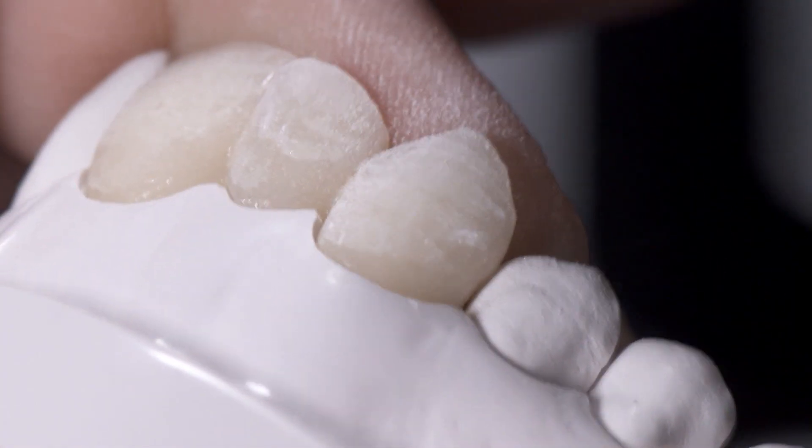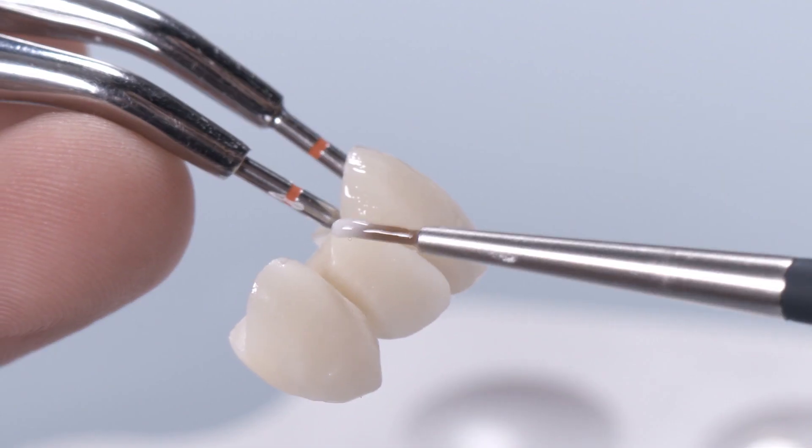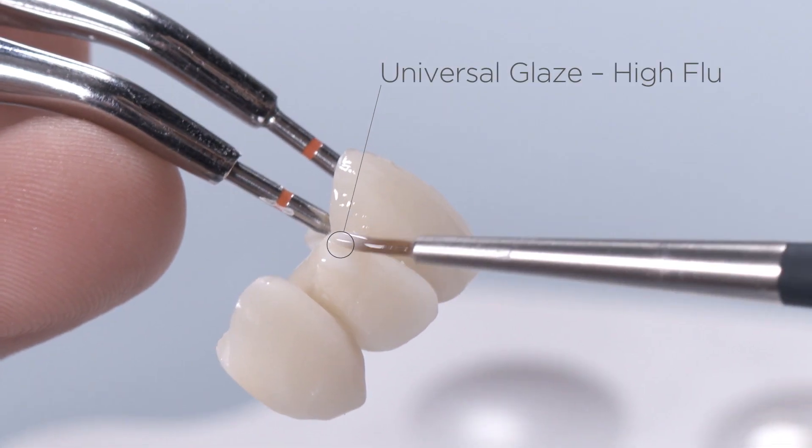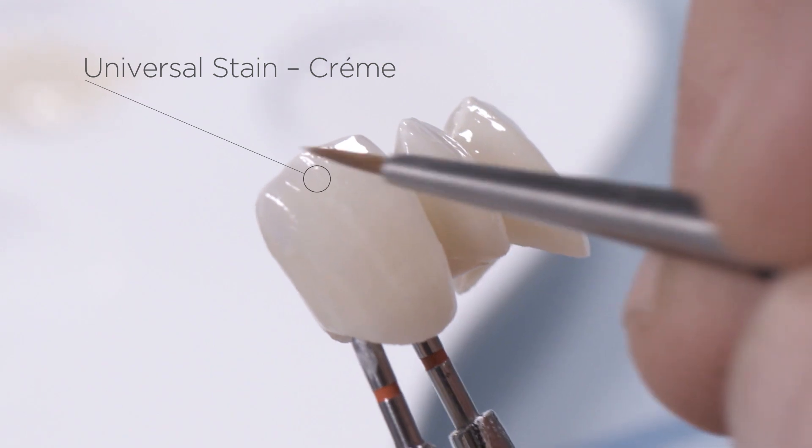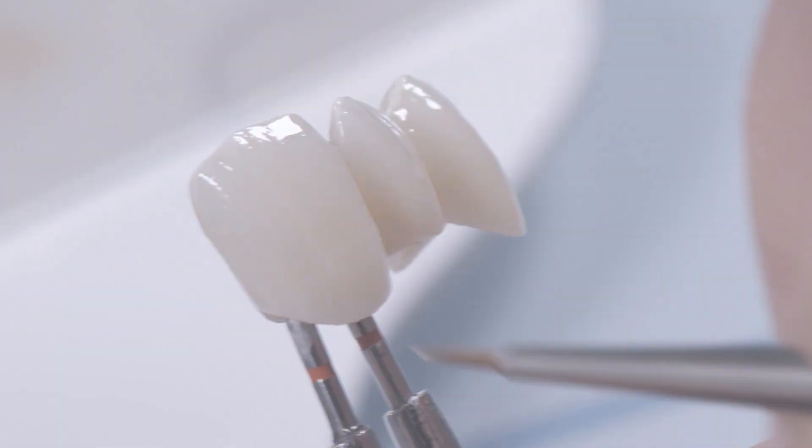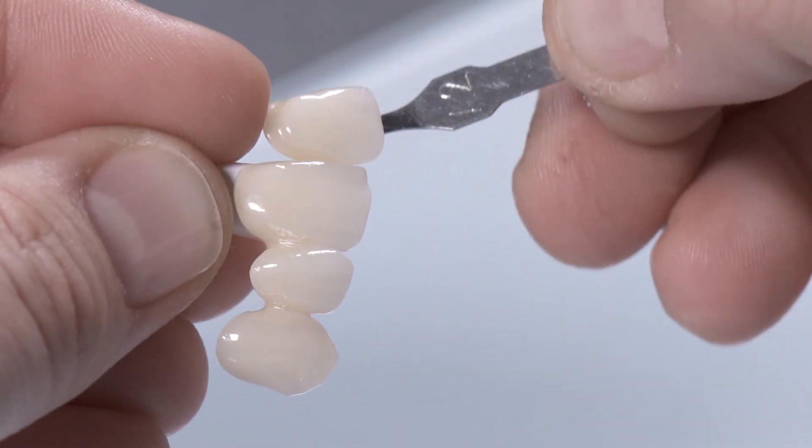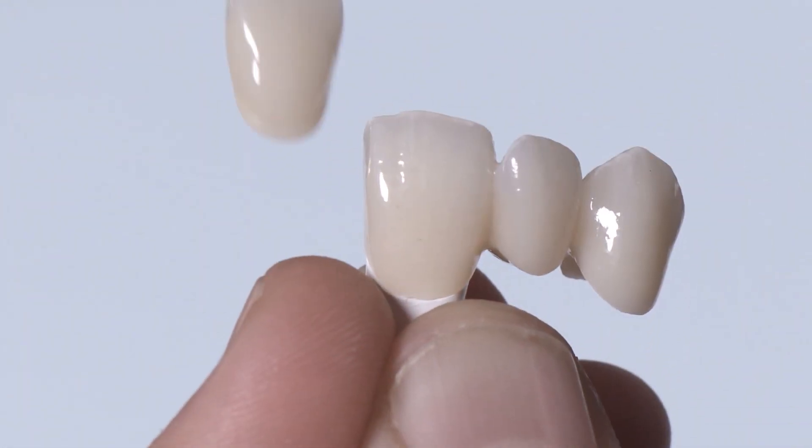The entire surface is glazed with High Flu Universal Overglaze, followed by adding delicate custom features in the incisal areas using Cream Universal Stain. The result, a perfect shade match. The opalescence of the incisal edge supports the natural appearance of the restoration.